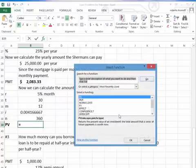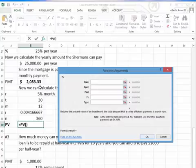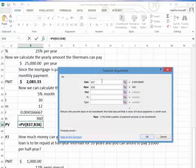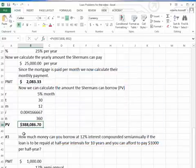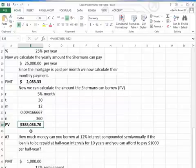Therefore, the amount they can borrow using the PV formula says the interest rate, which is the I, the periodic interest rate. The N is the 360 payments that they are making minus the amount of the payments. So we see a positive number in our PV column, the amount we can borrow. And that tells us that the Shermans can borrow a maximum of $388,086.70.